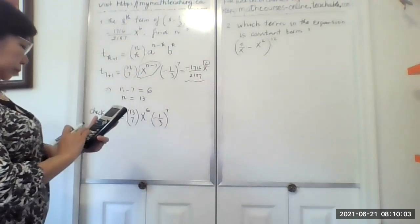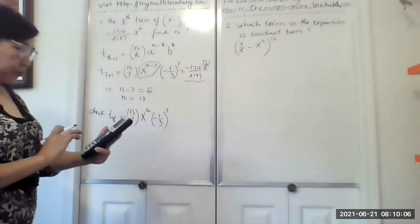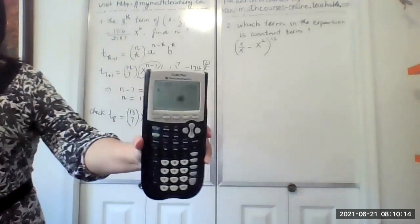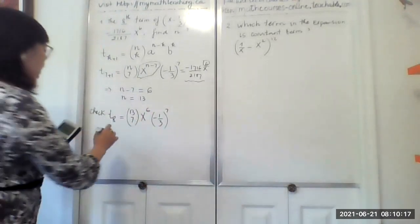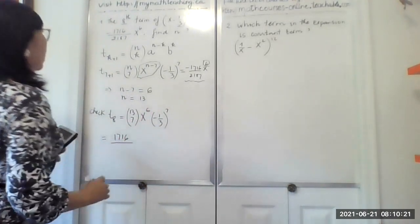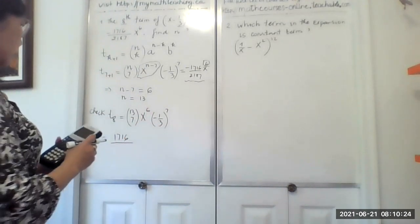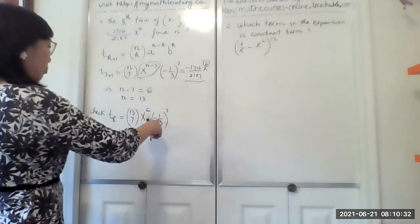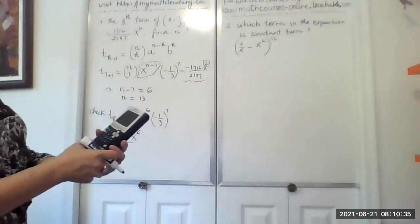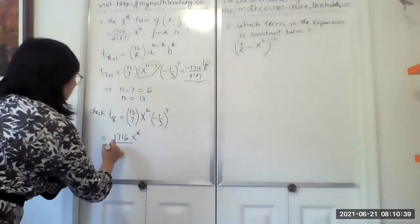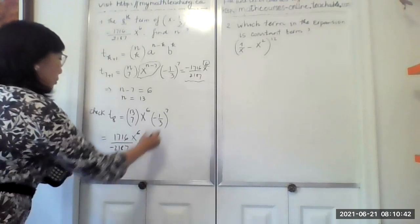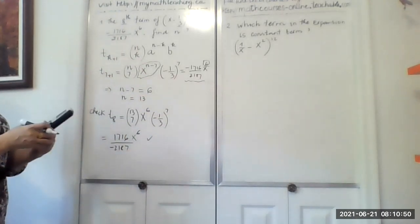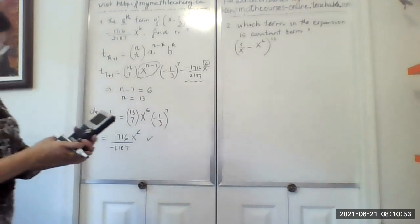So 13 choose 7, that number is 1716. This number will give us 3 to the power of 7 which is 2187. And it should be minus 2187. And exactly, that is the way it is. So we check it and it looks right. That's correct. That's how we answer this question.